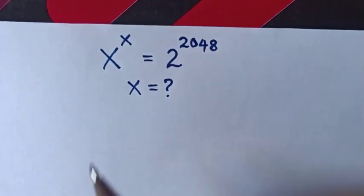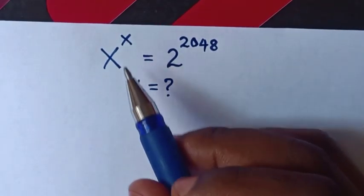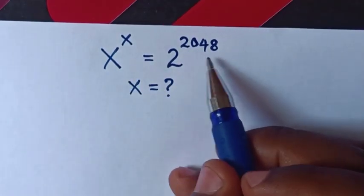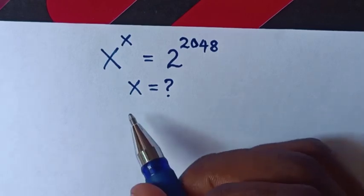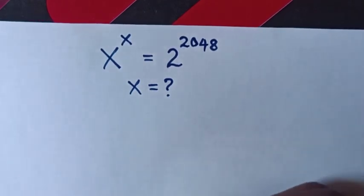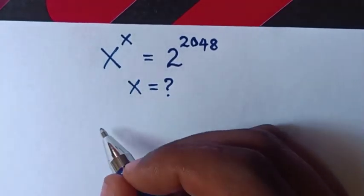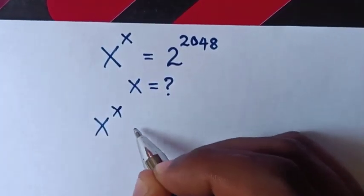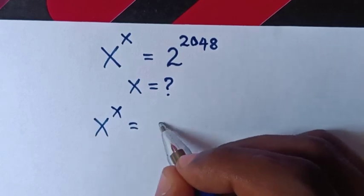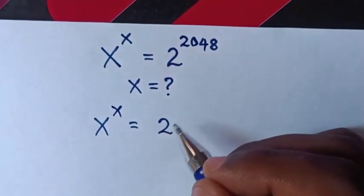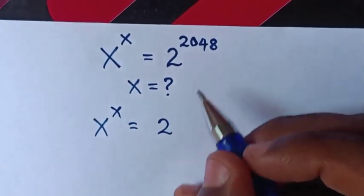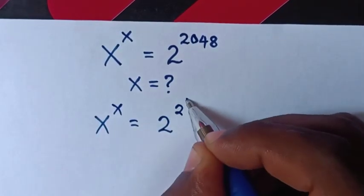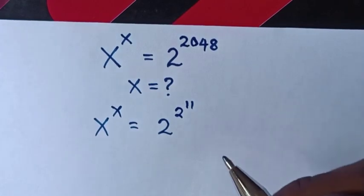Hello. How to solve x power of x is equal to 2 power of 2048, to find the value of x. Here it will be x^x = 2^2048, which is the same as 2 power of 2^11.